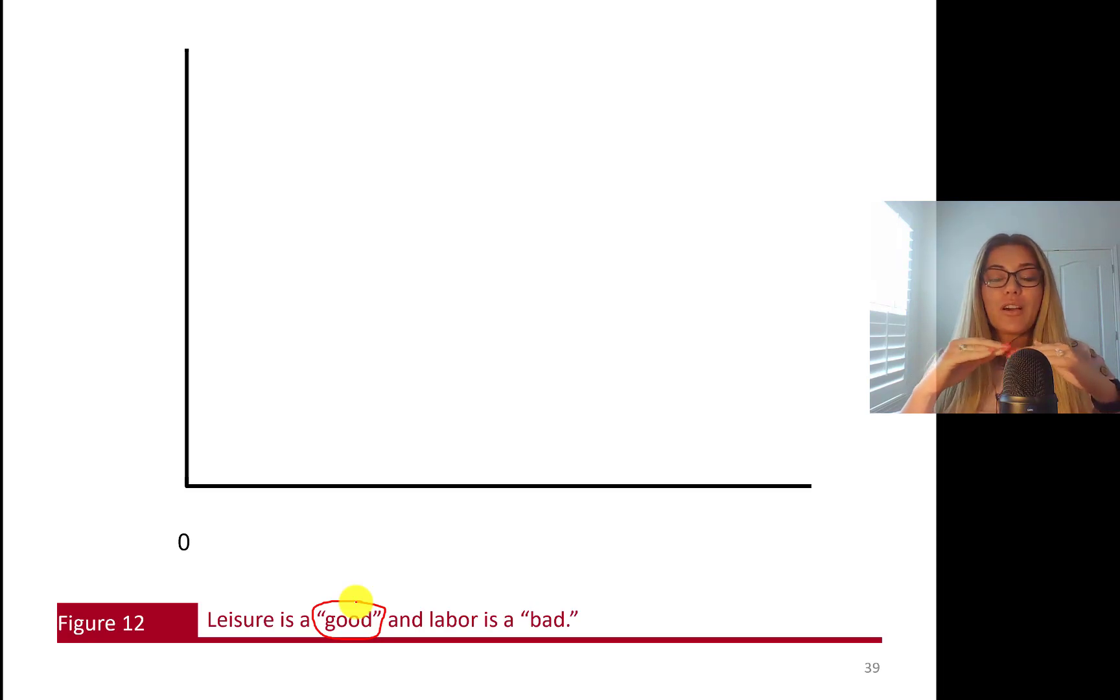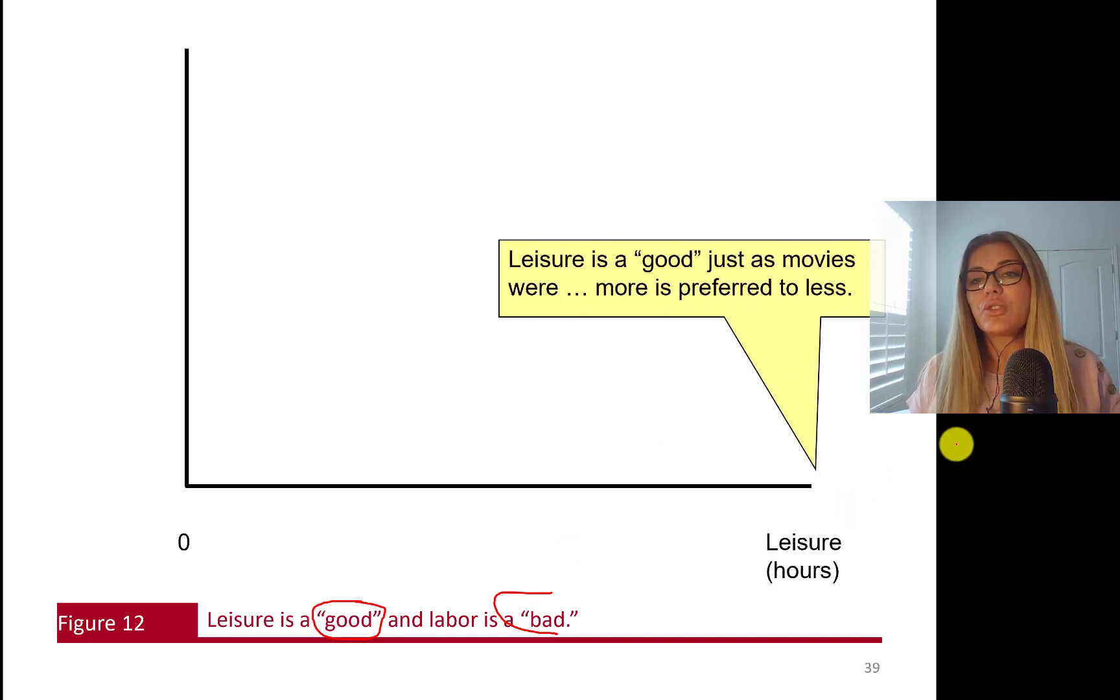So there's a direct trade-off between leisure and food. Each working hour brings 10 units of food. If we draw this in a graph, we're going to assume leisure is good. That means the more leisure we have, the happier we are. Of course it is for most people, unless you're an extreme workaholic.